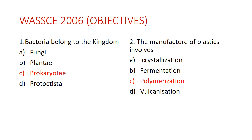All living organisms have been put into one of five kingdoms. Classification is sorting living organisms into different categories based on their similarities. The five kingdoms are: Prokaryote, Plantae, Animalia, Protoctista, and Fungi. Humans belong to Animalia, plants to Plantae, plasmodium to Protoctista, and bacteria to Prokaryote — hence the answer is C.